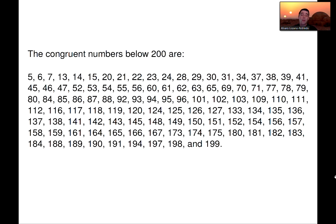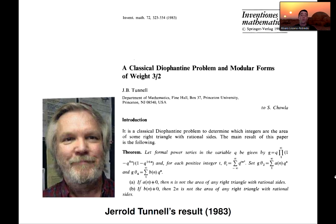By the way, the congruent numbers below 200 are classified, and this is a complete list of congruent numbers up to 200. And what else do we know about the congruent number problem is that it's open. We don't know how to classify all the natural numbers that are congruent numbers, but we do have some very interesting results.